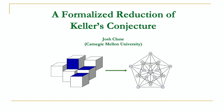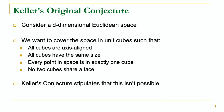I'll be talking about a formalized reduction of Keller's conjecture. To start, I should clarify what Keller's conjecture actually is. Suppose you have an arbitrary d-dimensional Euclidean space. What we want to do is cover the space in unit cubes such that all cubes are axis-aligned, all cubes have the same size, every point in the space is in exactly one cube, and no two cubes share a face. A set of cubes satisfying the first three properties is called a tiling, and if all four properties are satisfied, it's called a face-share-free tiling. Keller's conjecture stipulates that face-share-free tilings don't exist.